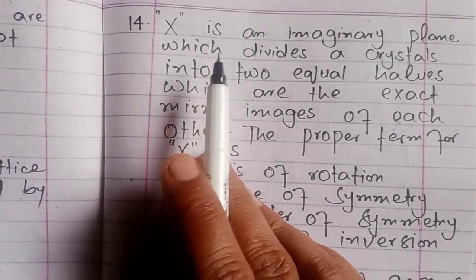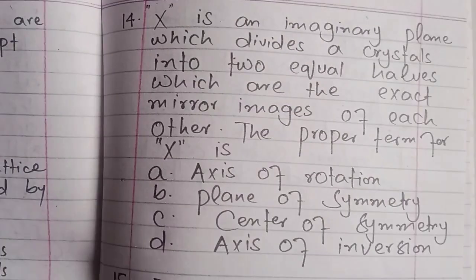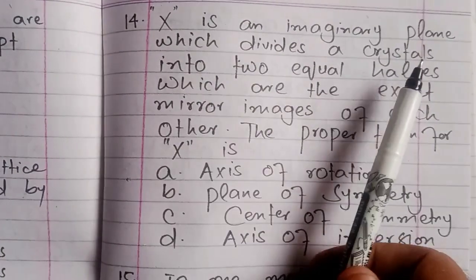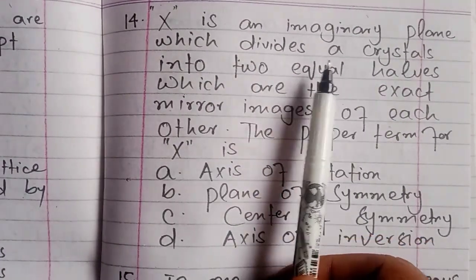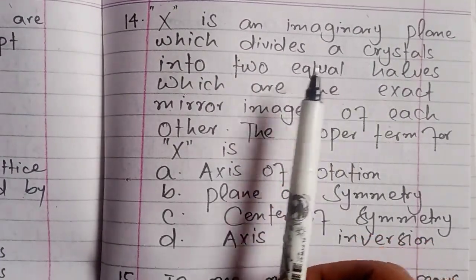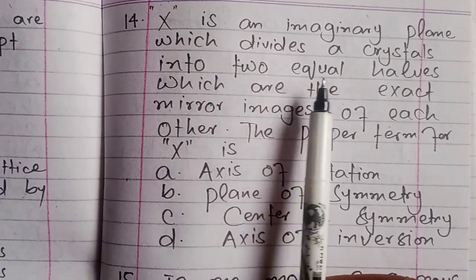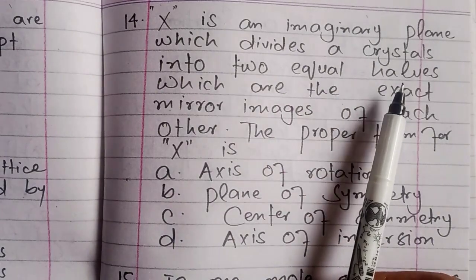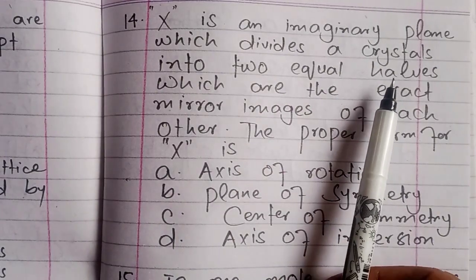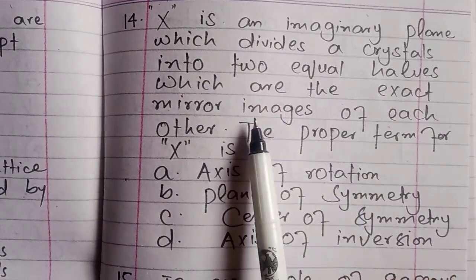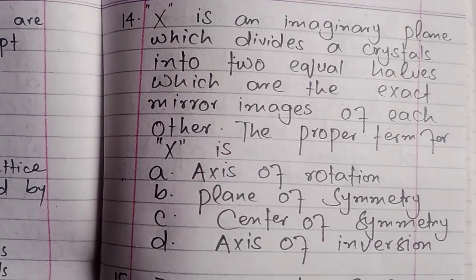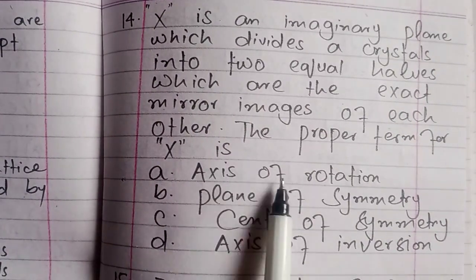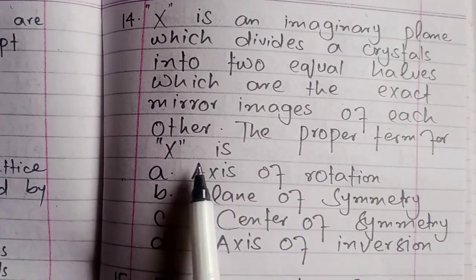Question 14 regarding crystal symmetry: A crystal can be divided into two equal halves which are exact mirror images of each other. What is the proper term for this symmetry element?